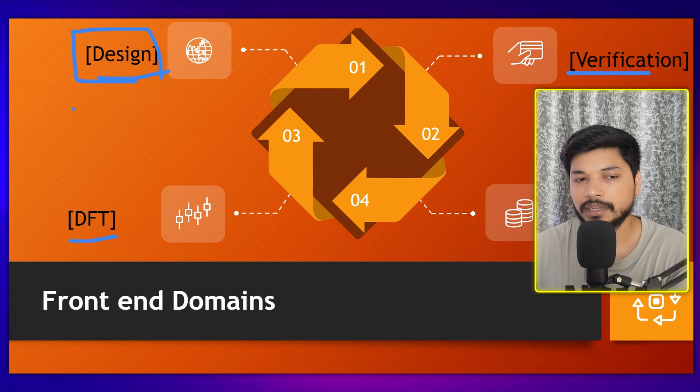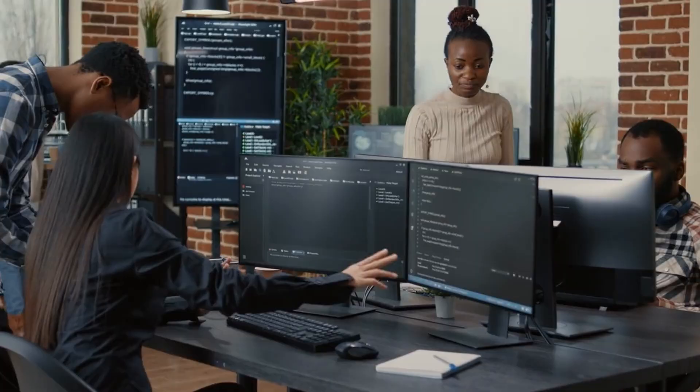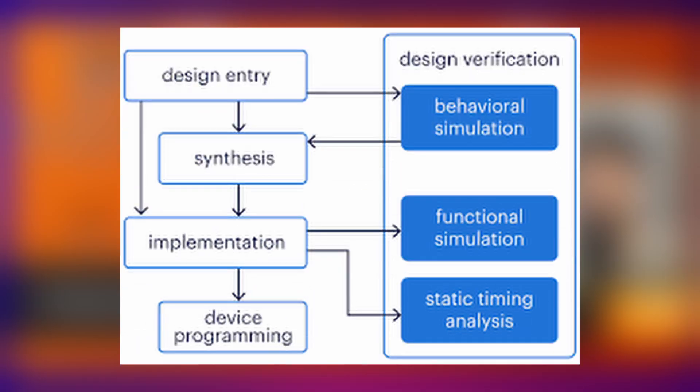As the name suggests, a design engineer designs integrated chips. For example, if you have to design a circuit which takes an input A and gives an output Y, that is the work of the design engineer. The design engineer understands all the requirements from the company or client and then starts working on the design part.